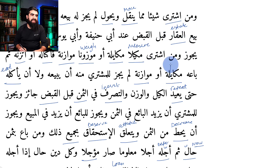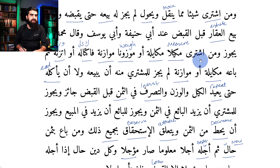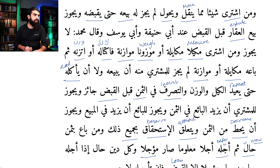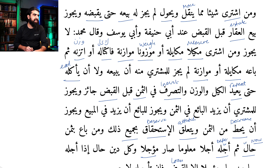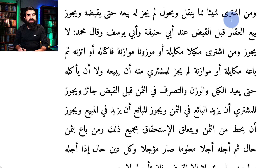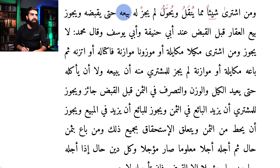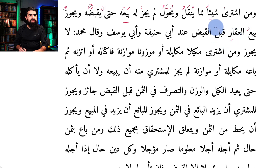Actually I'm supposed to do the tarkib — let's do the tarkib just in case I forget. Tarkib time. Man ishtara — ishtara is the fi'al — shay'an is the maf'ul bihi, mimma yunqalu — this is the majhool — yunqalu, yuhawwalu, lam yajuz lahu bay'uhu — fi'al — hatta yaqbidahu. This is the anha.